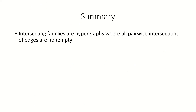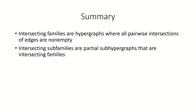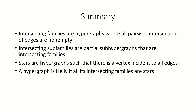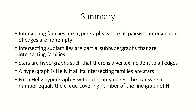To summarize: an intersecting family is a hypergraph where all pairwise intersections of edges are non-empty. An intersecting subfamily is a partial subhypergraph that is an intersecting family. A star is an intersecting family where there is at least one vertex incident to all of the edges. A hypergraph is heli if all its intersecting subfamilies are stars. And for heli hypergraphs without empty edges, the transversal number equals the clique-covering number of the line graph. That's it for this video.